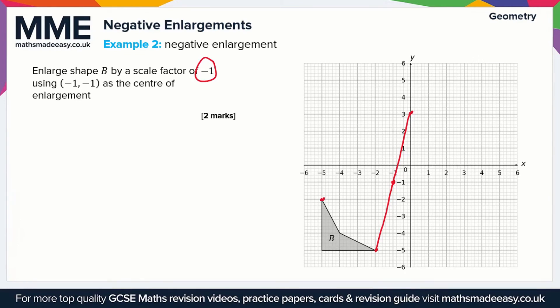For the top left corner of shape B, to get to the center of enlargement we go one square up and four squares across, then the same again — four squares across and one square up — which takes us to the new point. Then we just have the last couple of points to do.